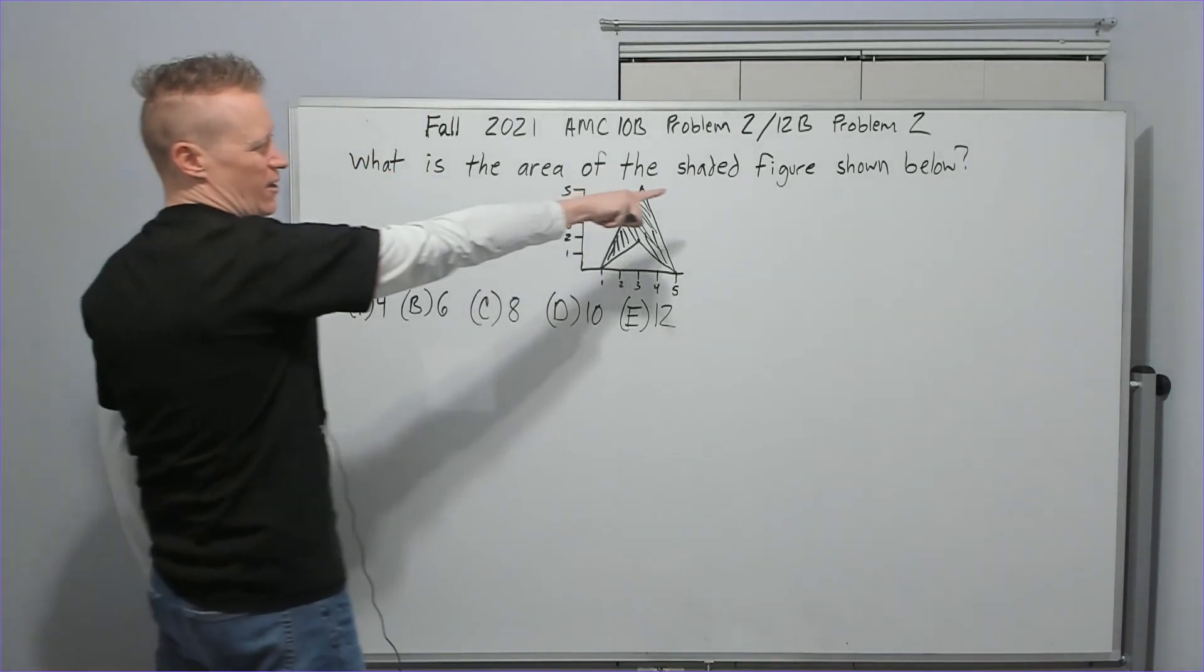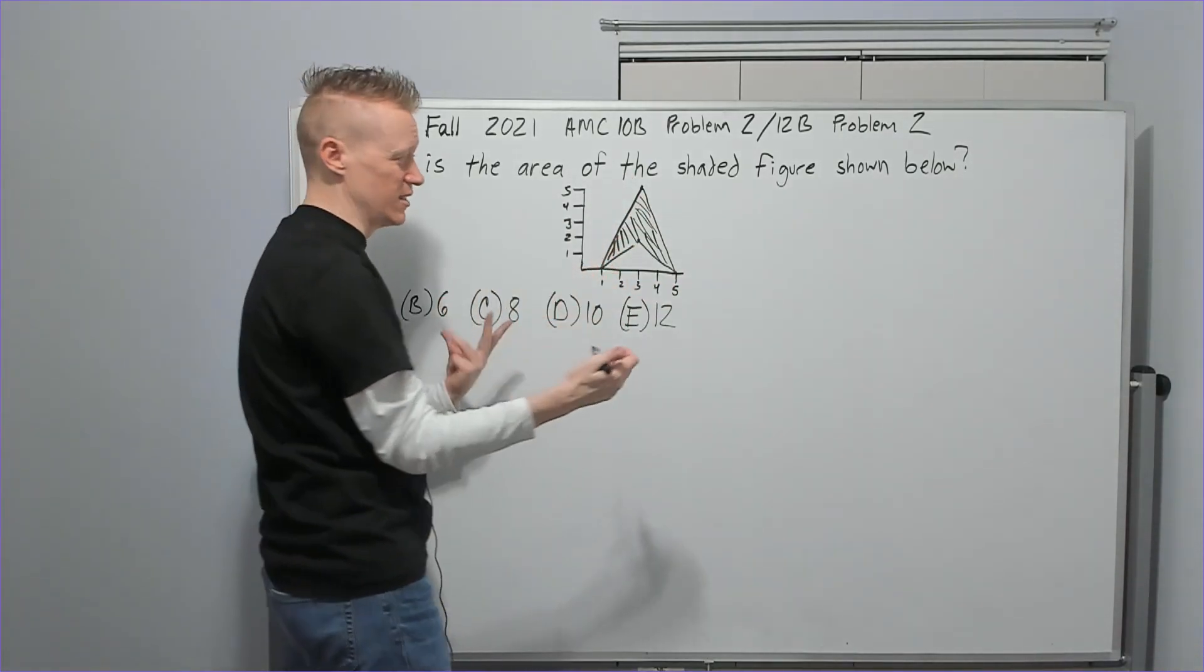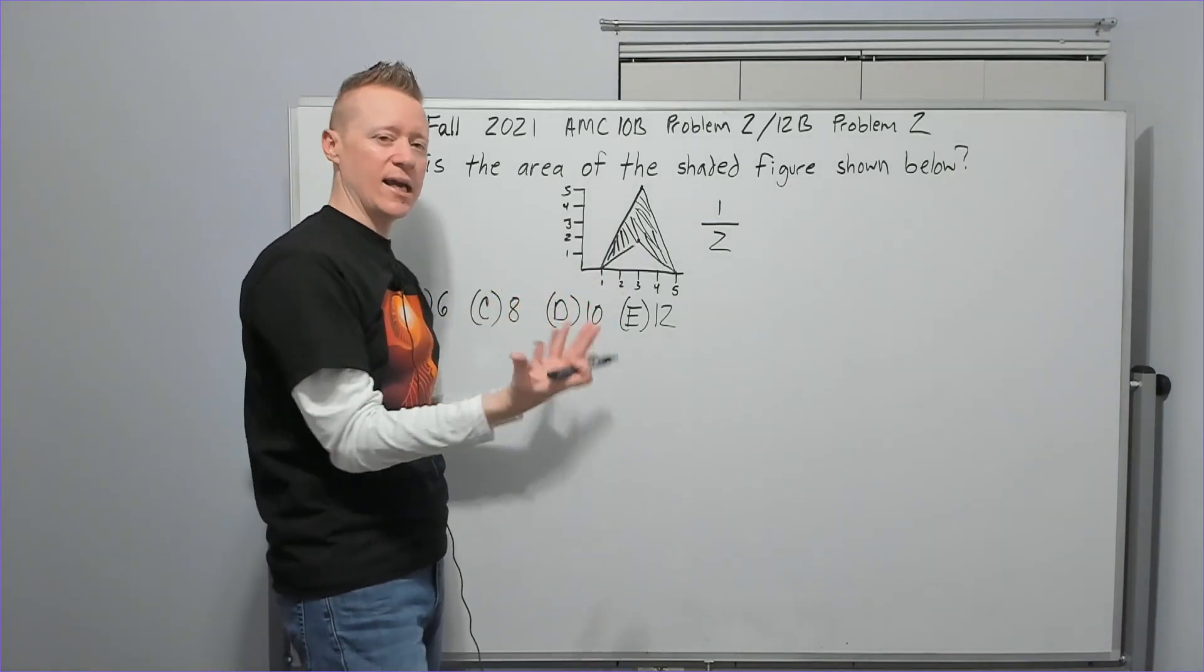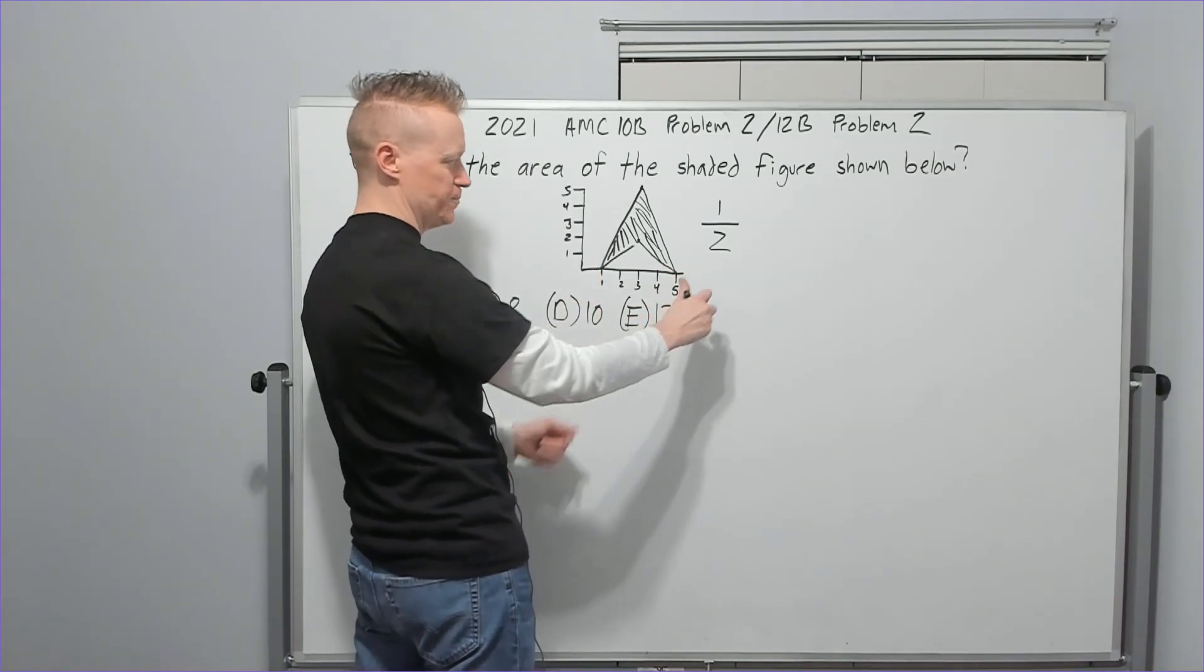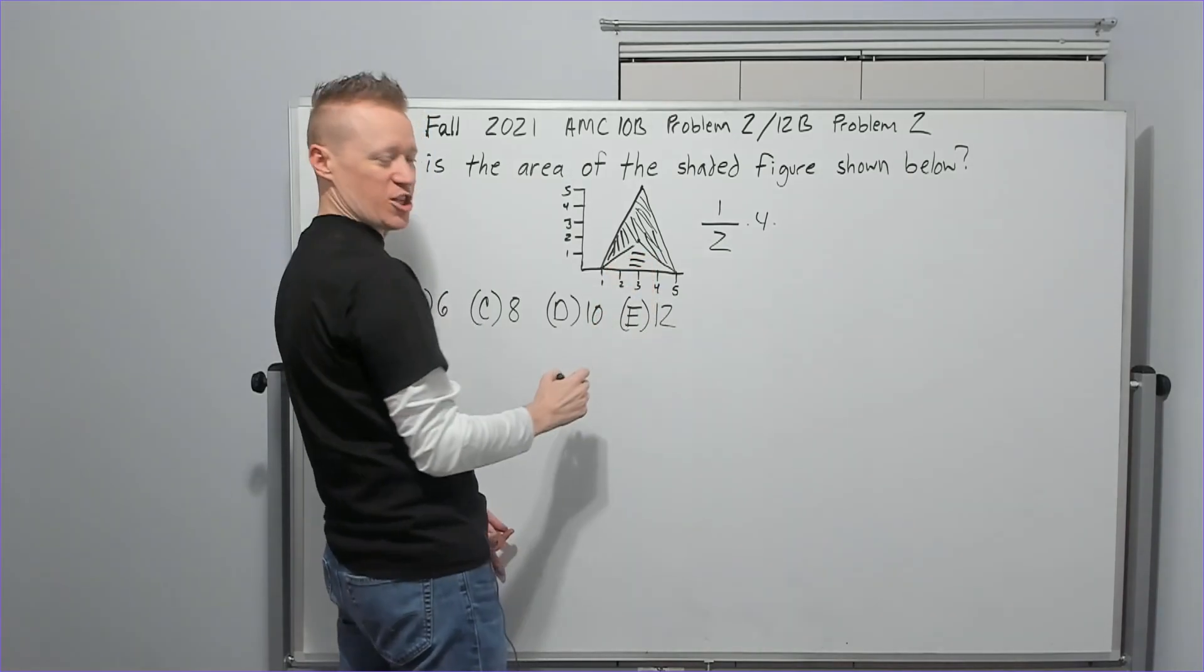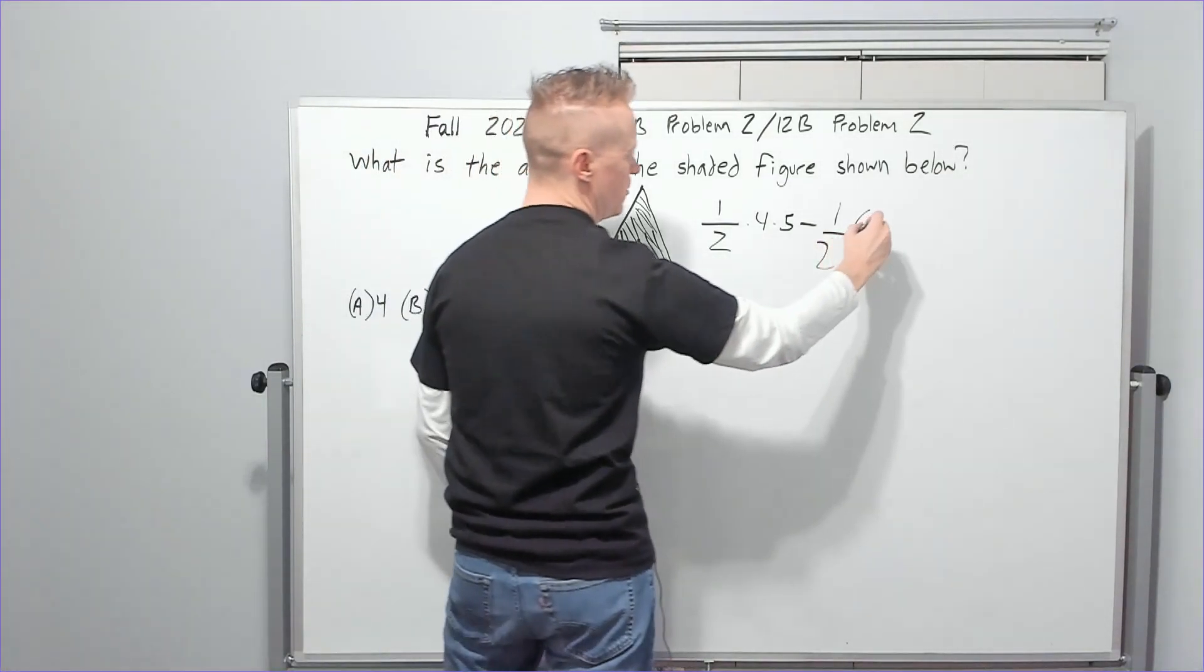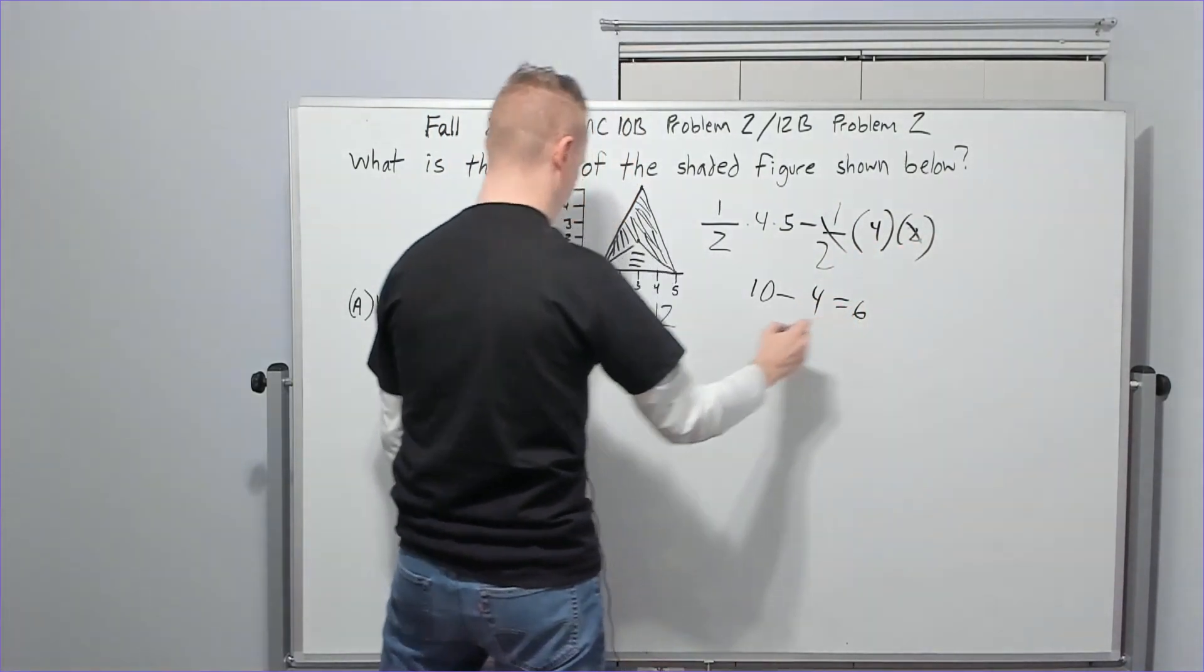Problem number two: What is the area of the shaded figure shown below? This is an isosceles triangle minus the smaller isosceles triangle. It's really just half base times height, a typical shaded region problem. Half the base times the height, the base is 4, height is 5 for the whole triangle, then we subtract the unshaded. Minus half times the other one, base of 4 but height of 2. So half of 20 is 10, half of 8 is 4. 10 minus 4 is 6, answer choice B.